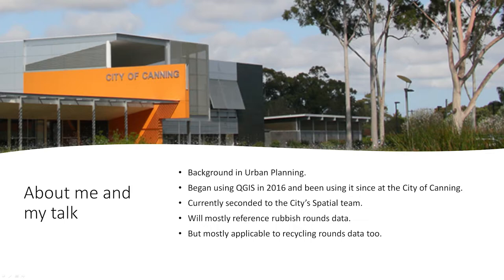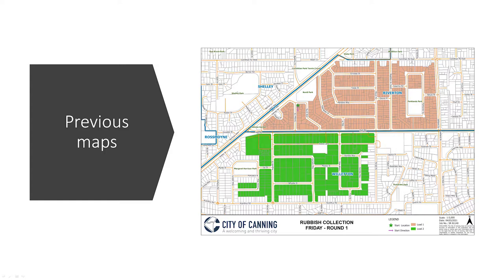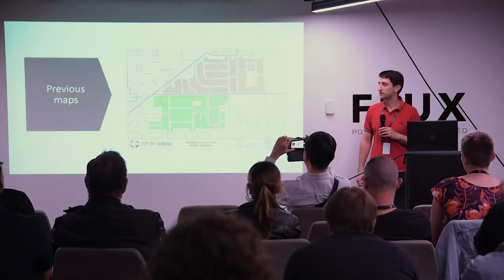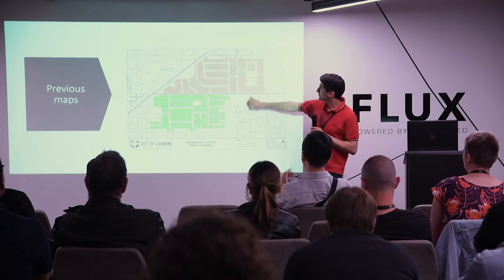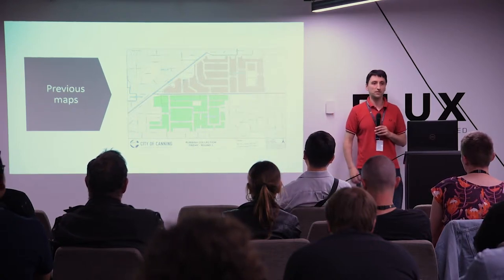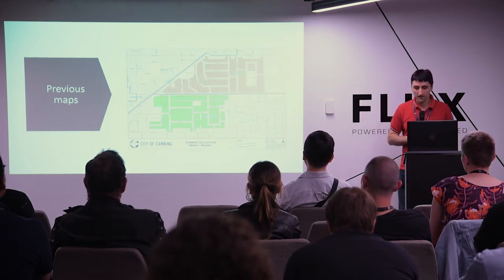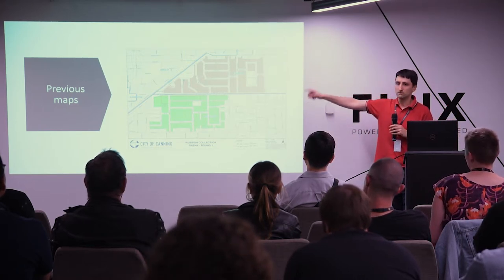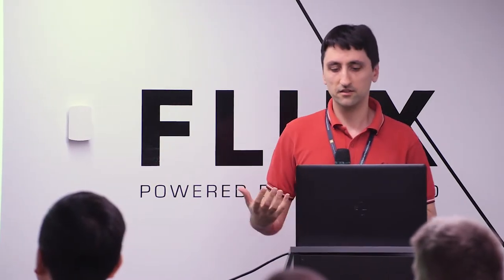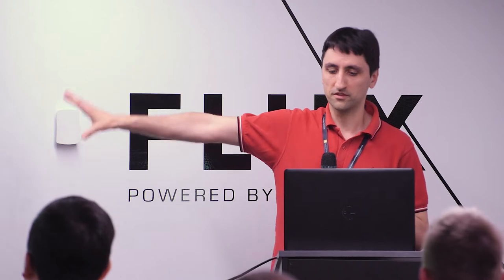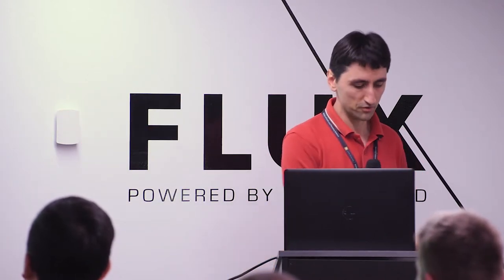I'm mostly going to reference the rubbish rounds data, but it also relates to recycling rounds — two separate datasets but fairly similar, so I'll use the terms interchangeably. These maps are for people that drive rubbish trucks. They'll have a day and a round — a round being one driver's day's work. They drive out and do load one, empty the truck, then come back out and do load two, with the idea of having both loads on the same map as much as possible.